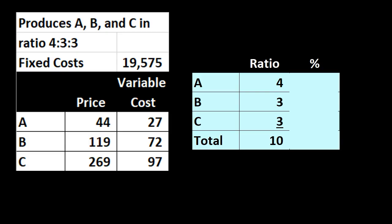To do this, we need some information and at least one added assumption. In our example, we are making and selling products A, B, and C. We sell them in a ratio of 4, 3, 3 — this is a key assumption needed to calculate the composite units. We also need fixed costs, as we would in any break-even analysis, and the price and variable cost broken out by product: prices are $44, $119, and $269 for A, B, and C respectively, and variable costs per unit are $27, $72, and $97.